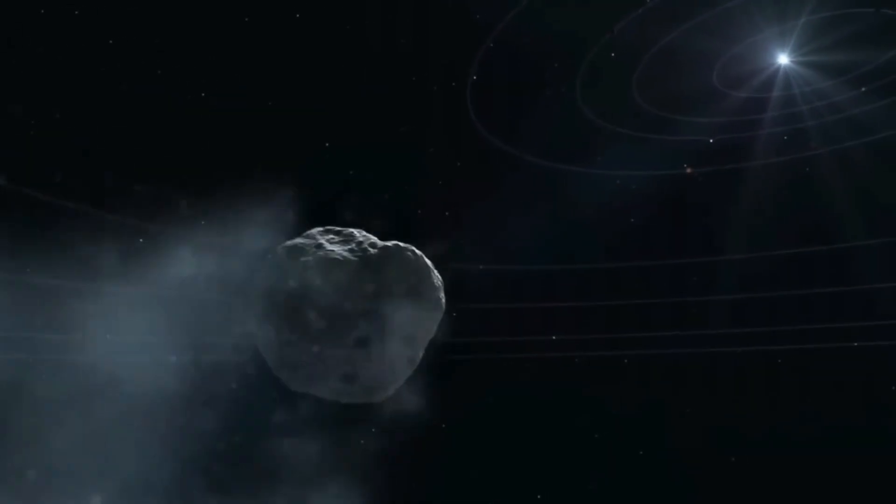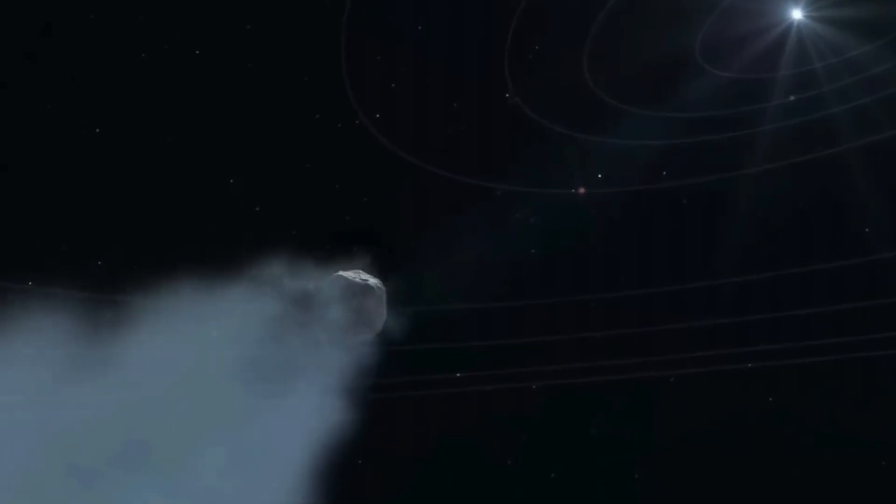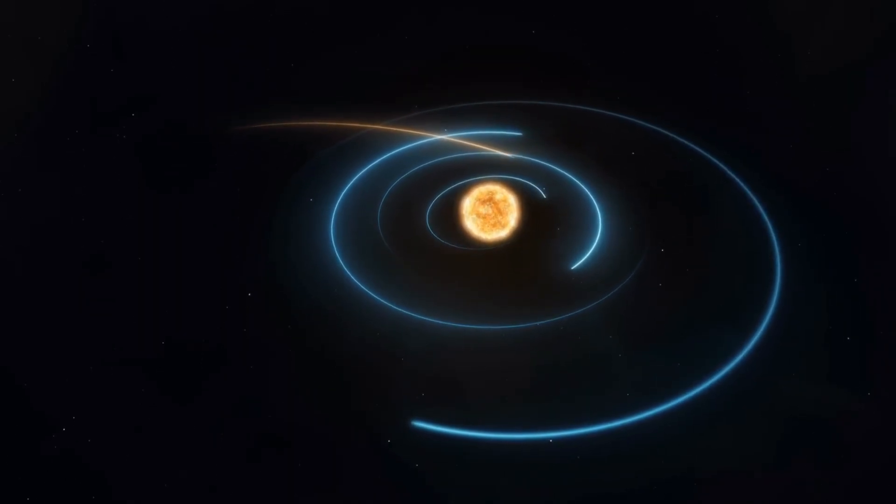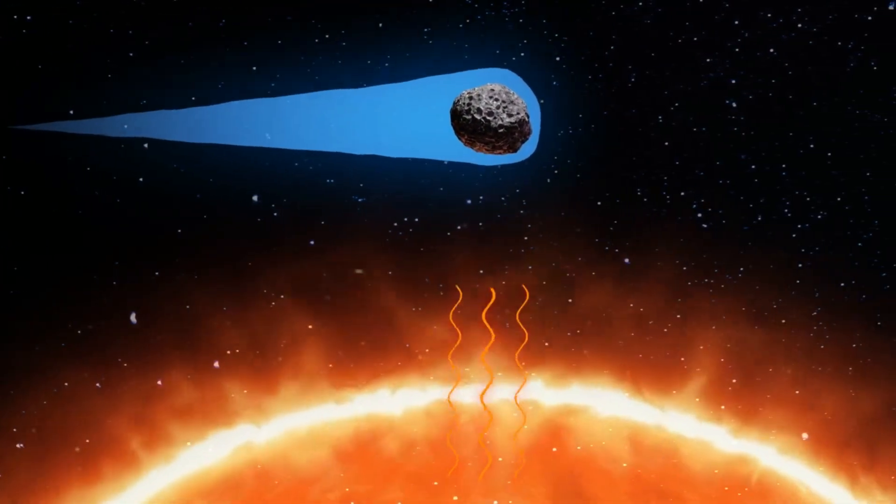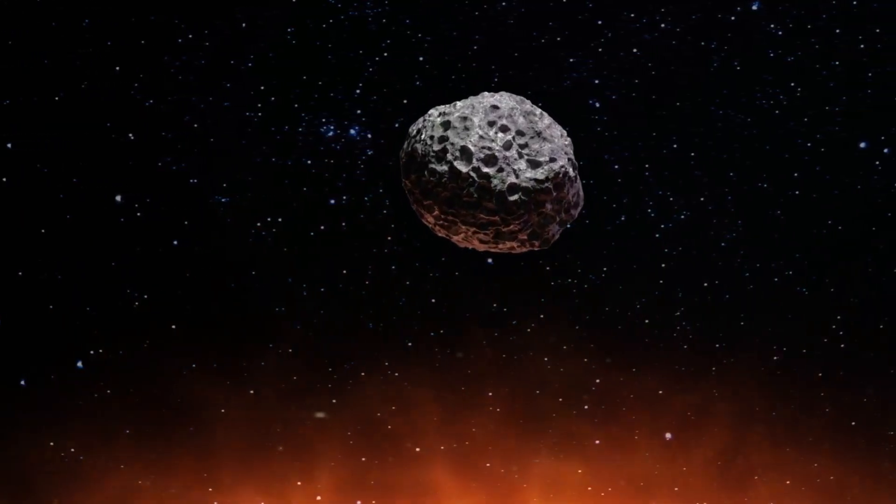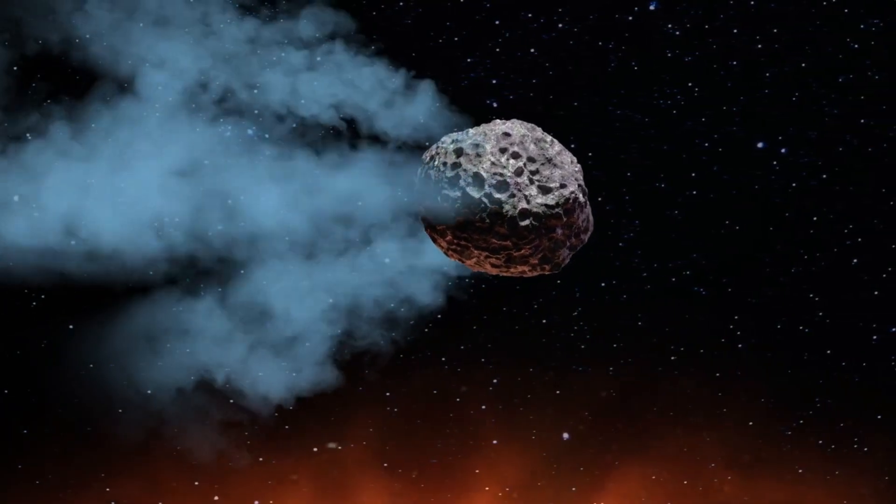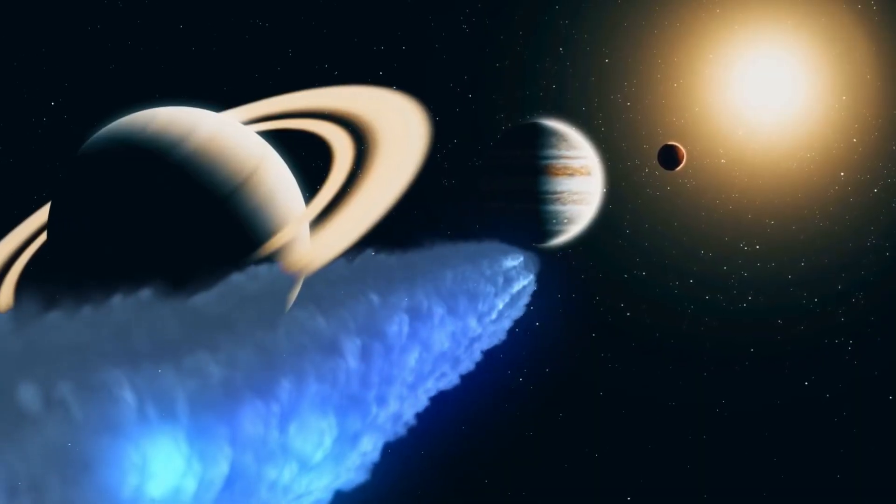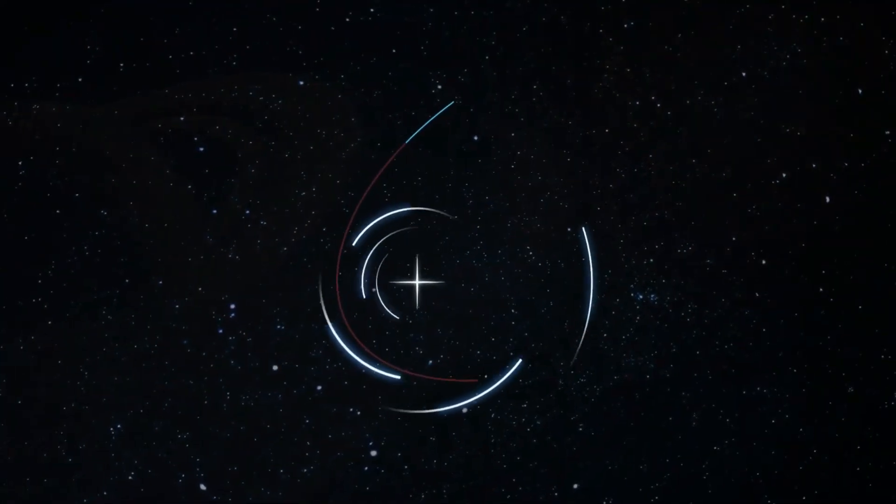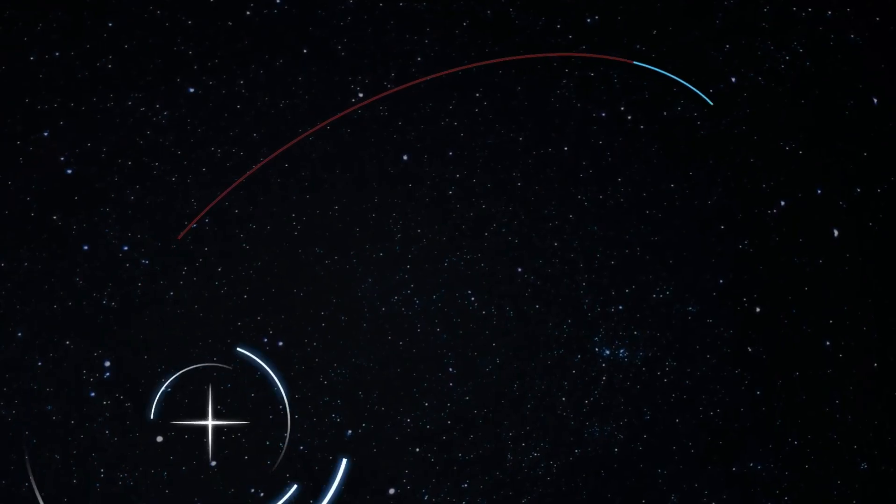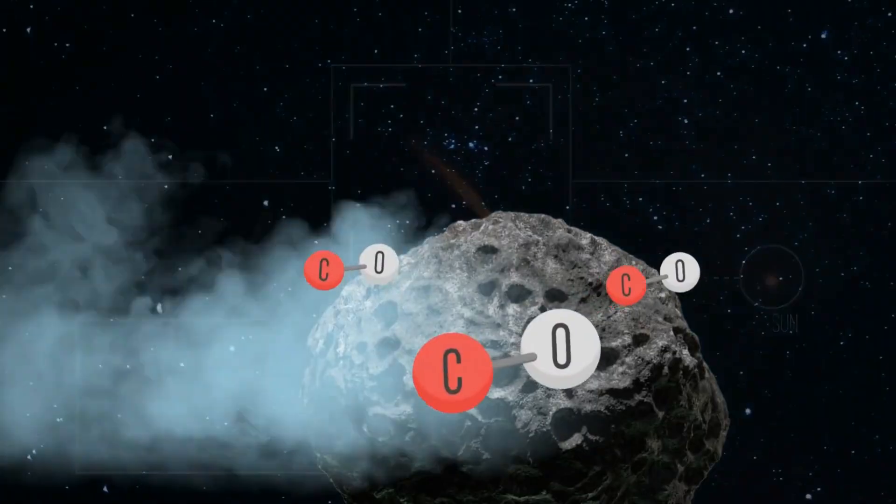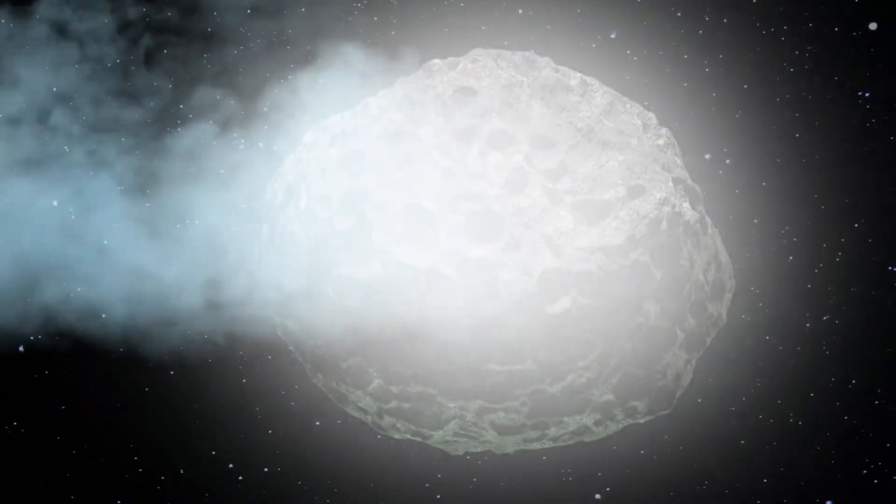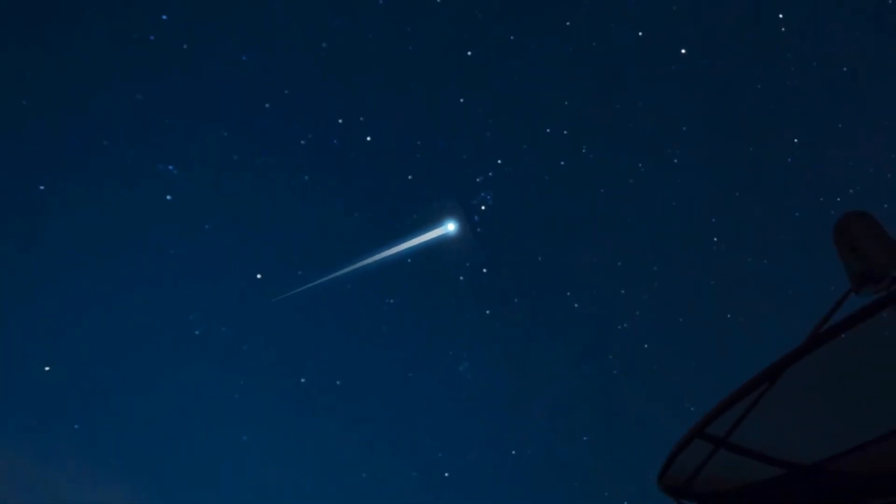There's also the question of intent. If 3i Atlas is indeed an artificial probe, what is its mission? The trajectory suggests it's designed to observe multiple planets in our solar system while minimizing detection from Earth. This could be passive scientific observation, the kind of thing humans might do if they had the technology to send probes to other star systems. But it could also represent something more concerning. The dark forest hypothesis, popularized by science fiction but rooted in serious scientific speculation, suggests that advanced civilizations might remain hidden because the universe contains predatory species that eliminate potential competitors. If humanity is being observed, there's a need to understand whether that observation is benign or represents a threat assessment.